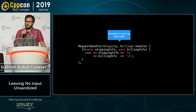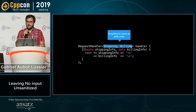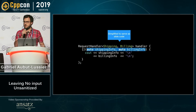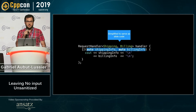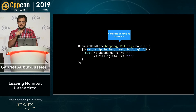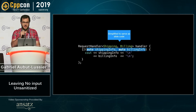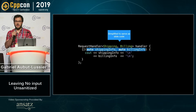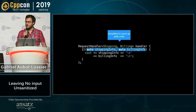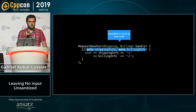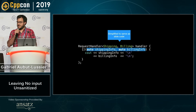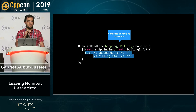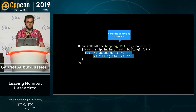Now that we have those two type descriptions, we can supply them to a generic request handler, along with our lambda that is going to implement our business domain logic. This lambda is only ever going to get invoked if every single one of the inputs is successfully validated. In this example, we receive the inputs as parameters to that lambda, and the implementation is really simple — we're just logging the inputs we receive.